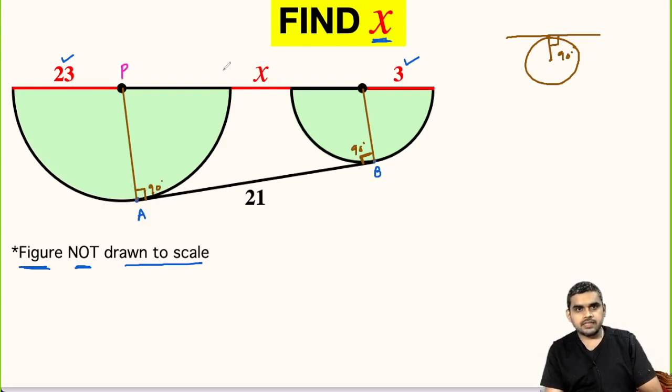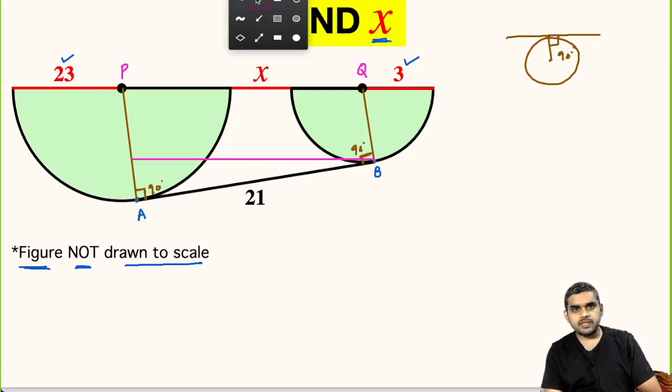Let us name the centers as P and Q. We need to do another modification. From point B, let us draw a line segment parallel to PQ.